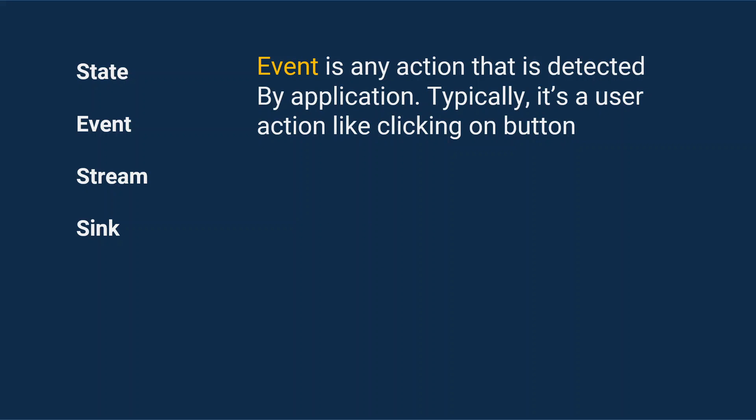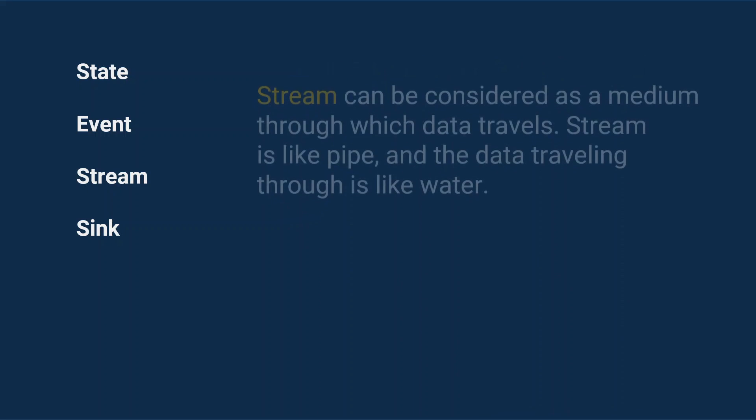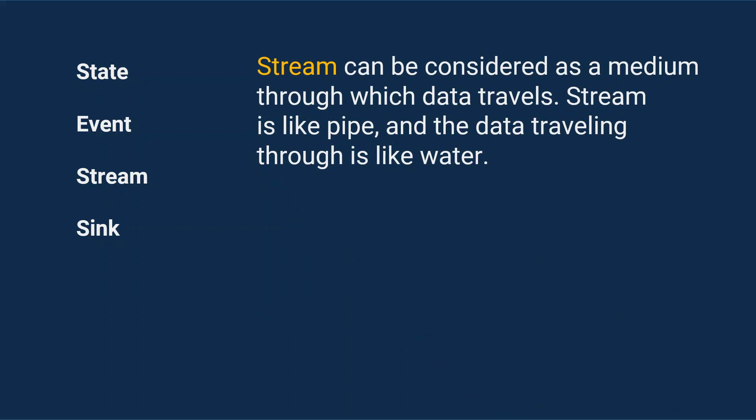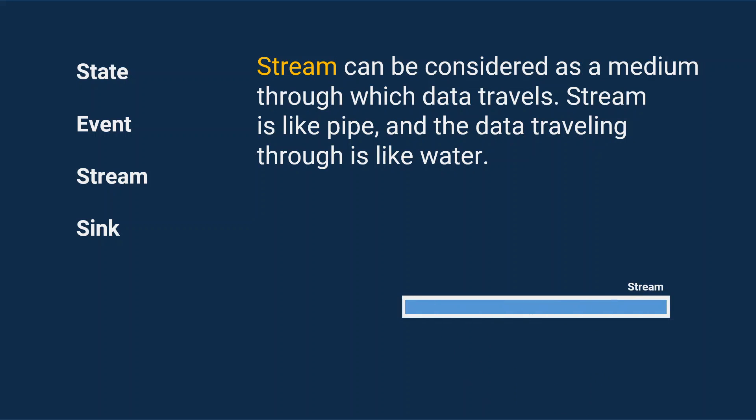An event is typically a user action like clicking a button. Suppose you have an application with a load button — whenever the user clicks on the load button, that action is what we call an event. Now let's talk about streams. A stream, as the name suggests, can be considered the medium through which data continuously travels. A stream is like a pipe, and the data traveling through it is like water.